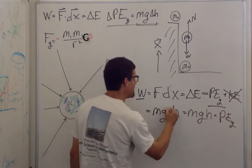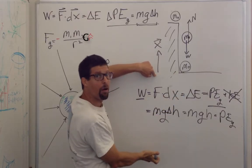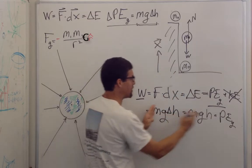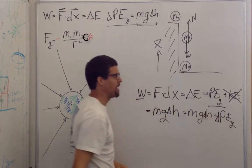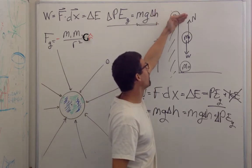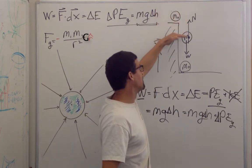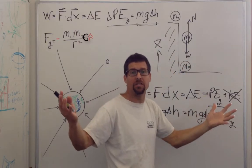And we add delta h simply because this might not be at zero. We might be calling zero down here. So the work I put in is a change of potential energy, which is equal to mg delta h. And of course, as we expressed before, if I push that rock over, all of that potential energy turns to kinetic energy before it hits the ground, and then it turns to heat.